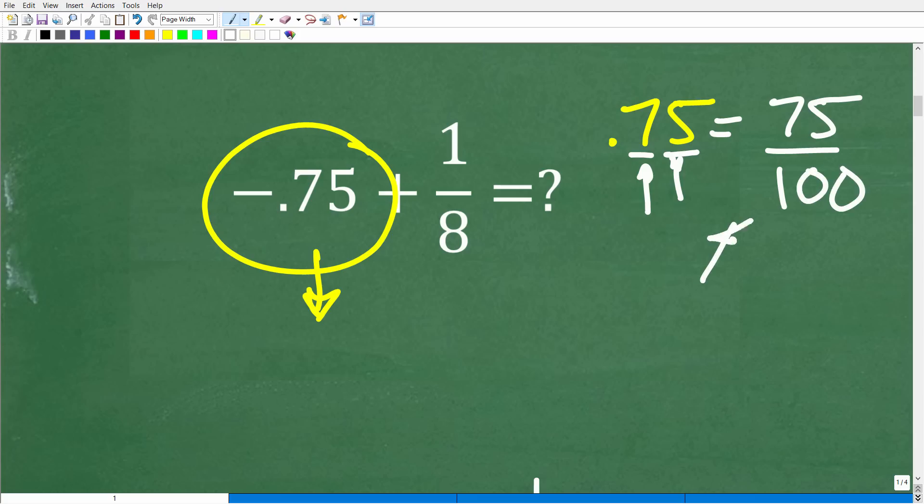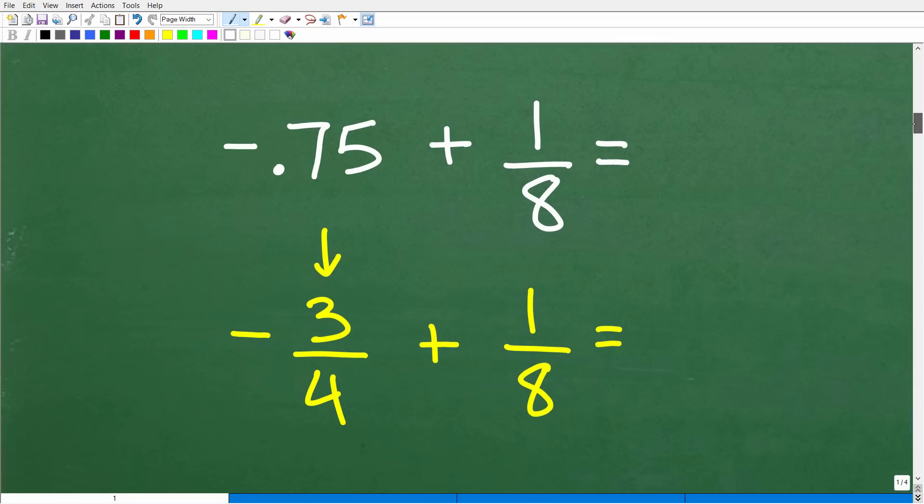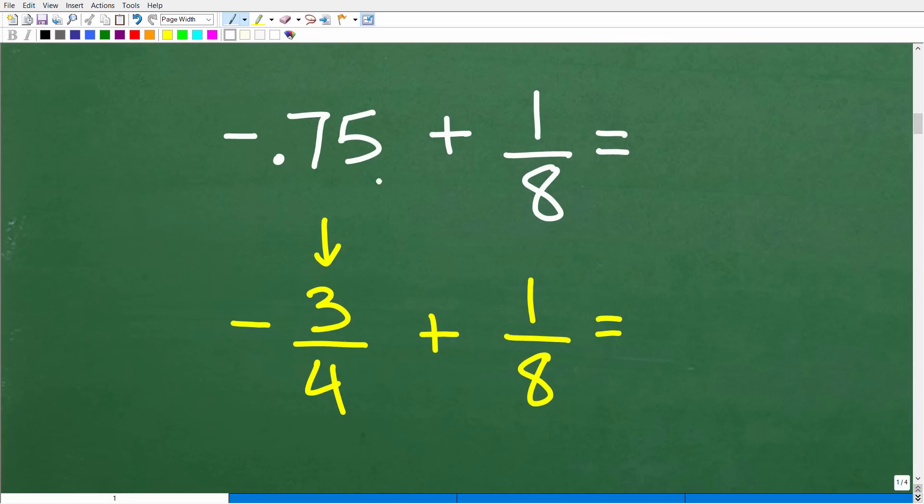Okay, so we can reduce this fraction down to 3 fourths. So negative 0.75 is equal to the fraction negative 3 fourths. Alright, so that means that our problem now is this. So instead of negative 0.75 plus 1 eighth, what we have is negative 3 fourths plus 1 eighth.